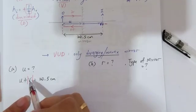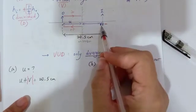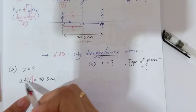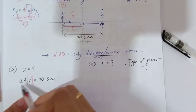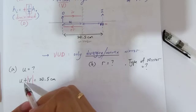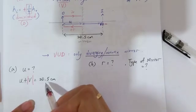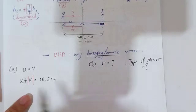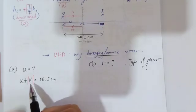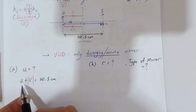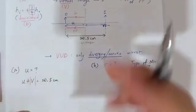We must make V positive by taking the modulus, because we know V is negative. Then it will not subtract — it will just add up: U plus positive V will give 20.5 cm. But we don't have further information on V and U separately.